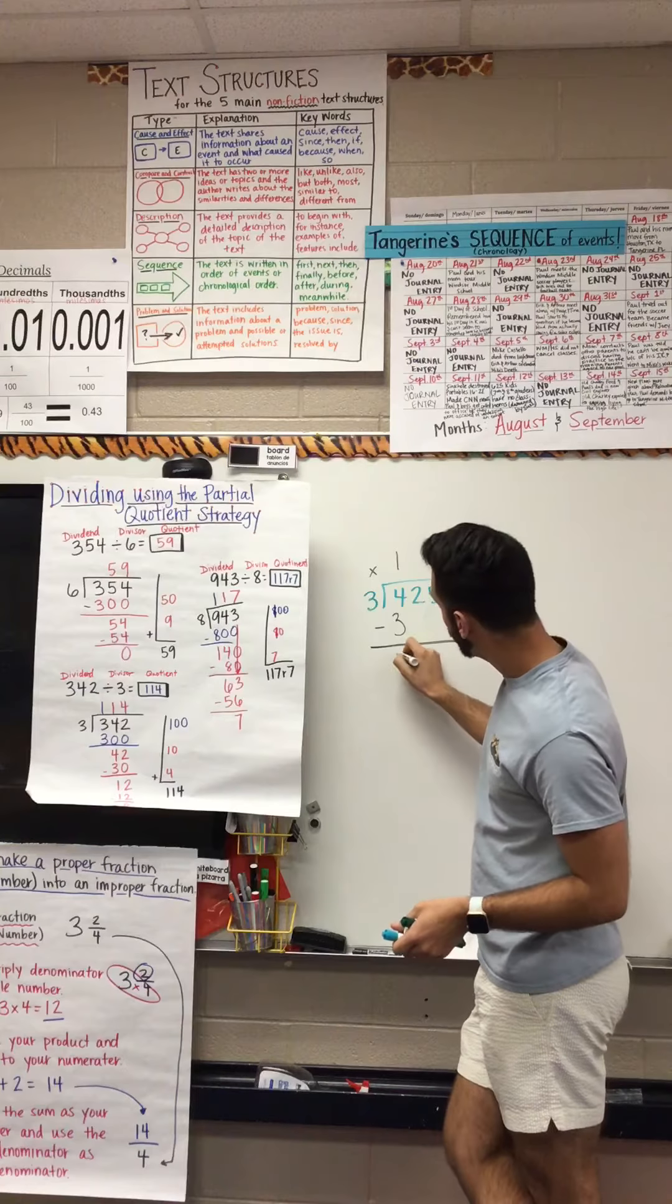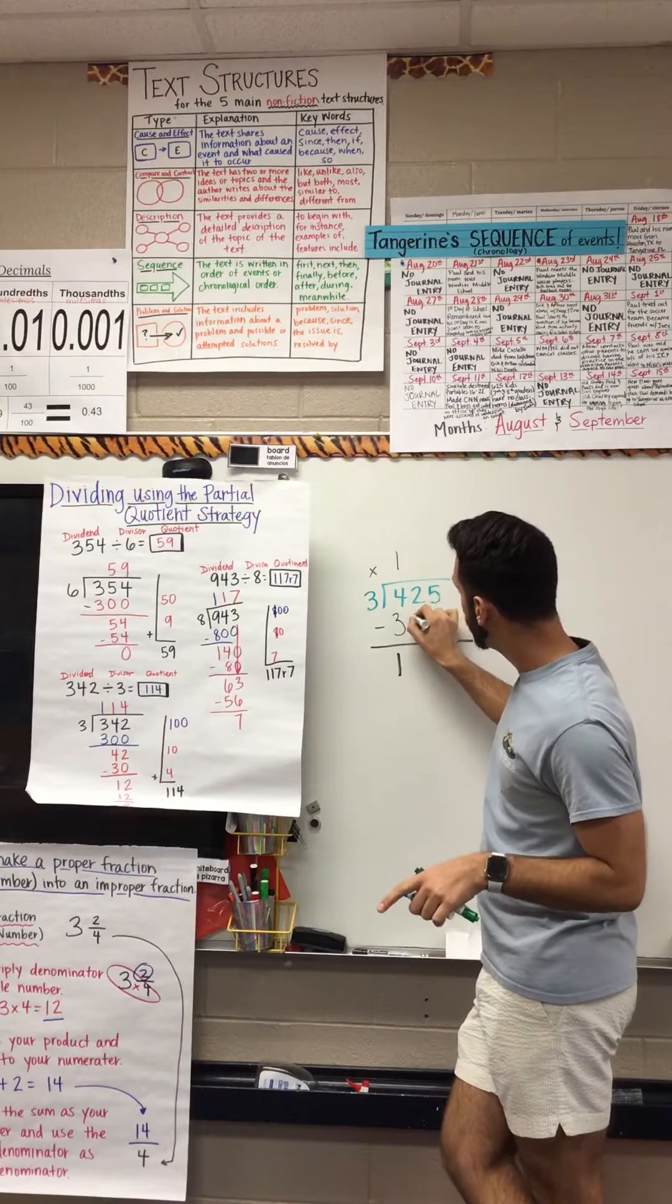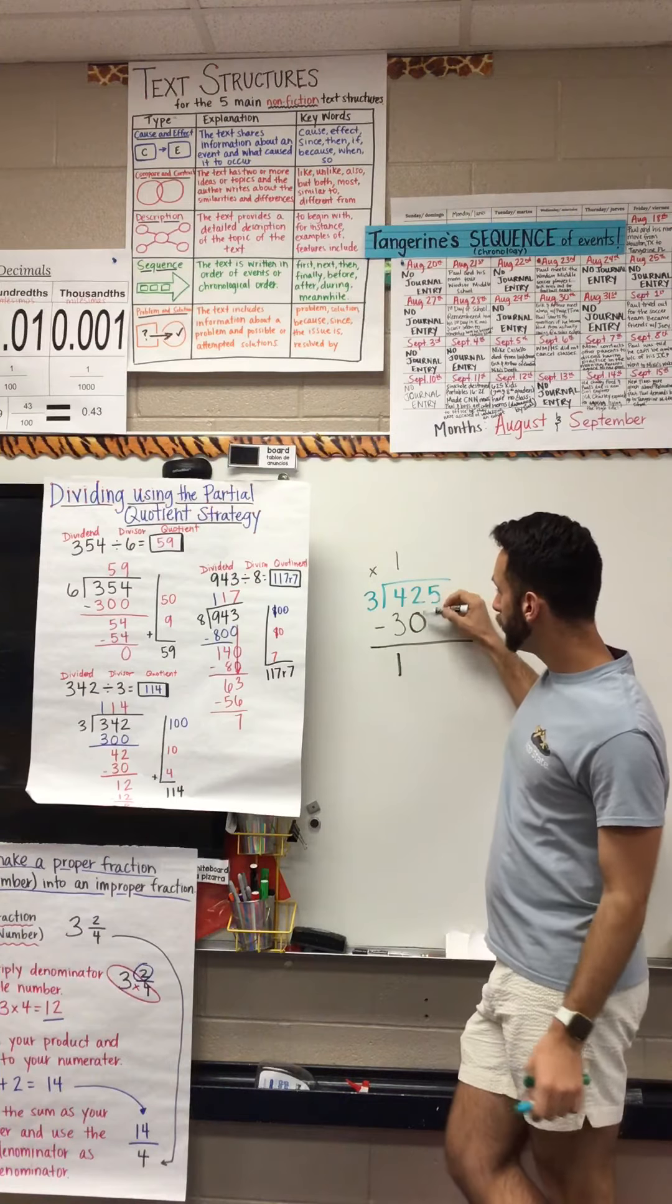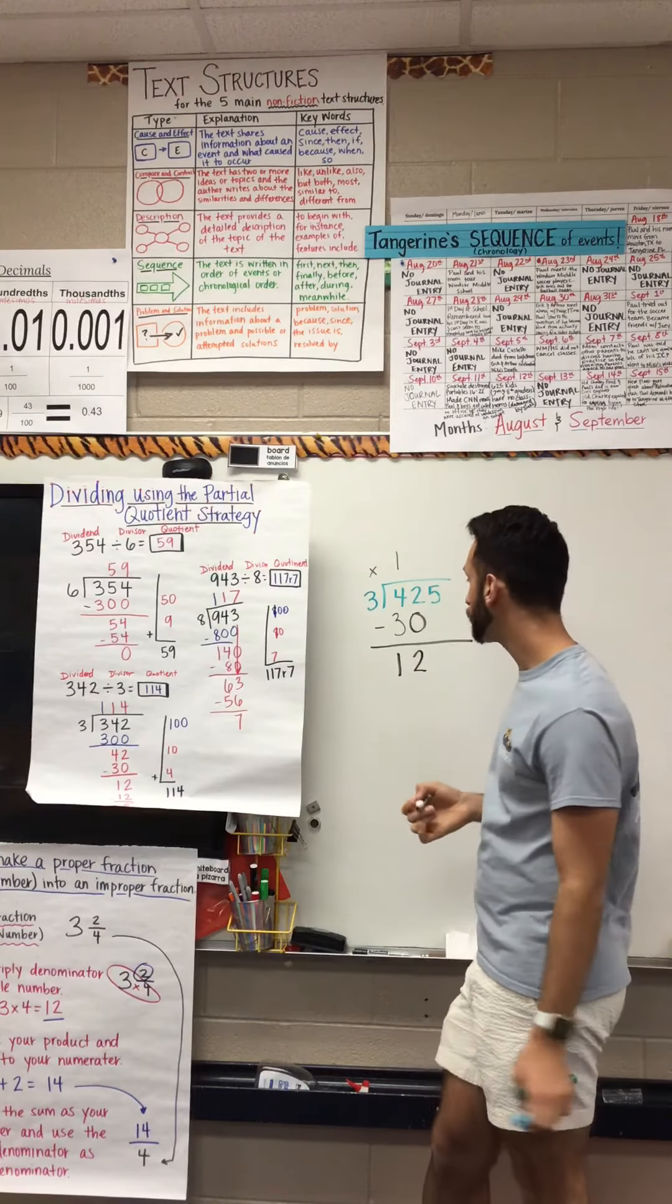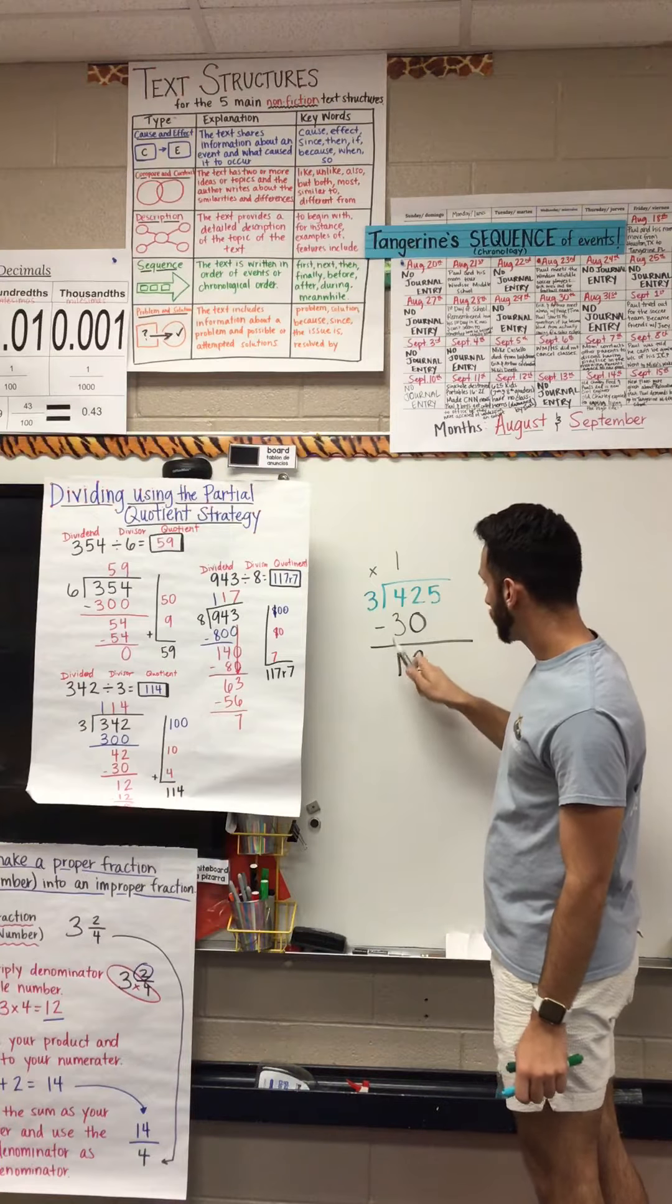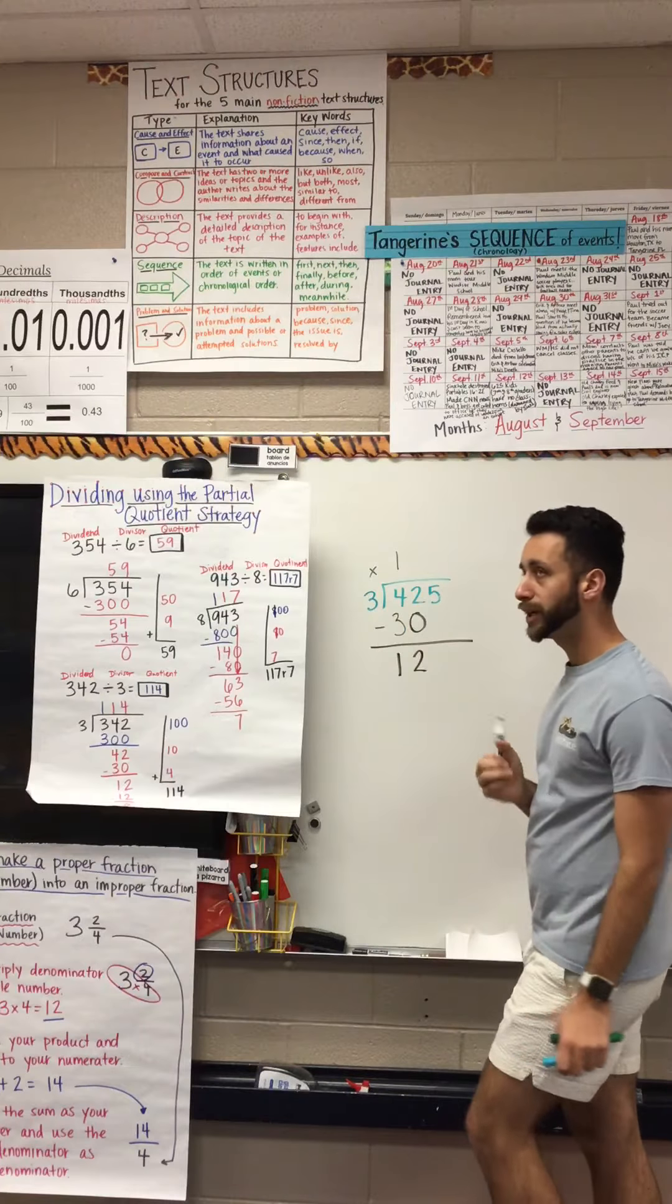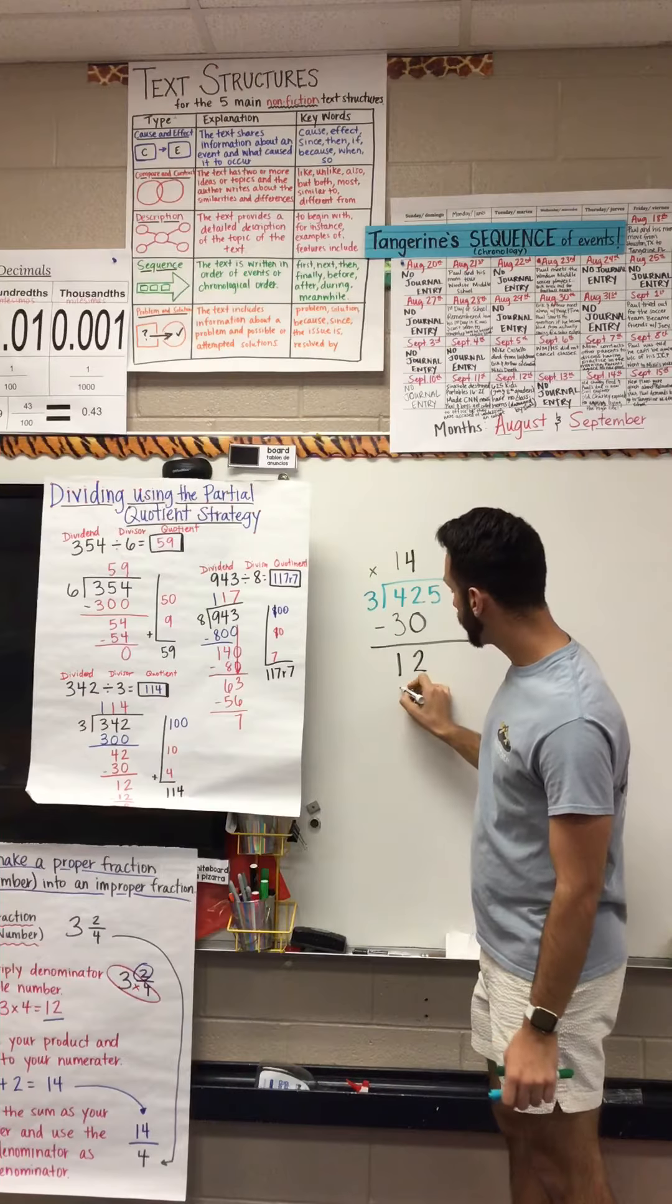Don't forget you have to add that zero right there. So then you do 2 minus 0, straight down, 2. Pretty simple. So then, how many times does three go into 12? Three, six, nine, twelve. Four times. That's easy. So four times three equals twelve. You write twelve underneath that, subtract it, you get zero.